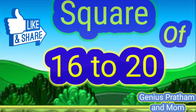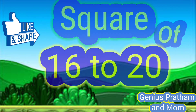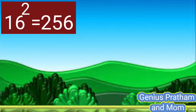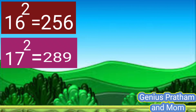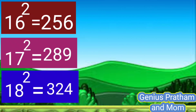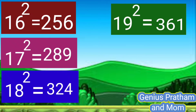Now square of 16 to 20 numbers. Square of 16 is 256. Square of 17 is 289. Square of 18 is 324. Square of 19 is 361.